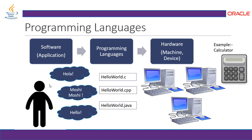To understand it better, a programmer or developer writes a sequence of instructions to make a machine understand. For example, a calculator is a machine, and a human programmed it with addition, subtraction, multiplication, and division using a programming language.